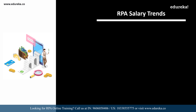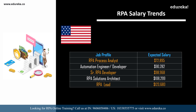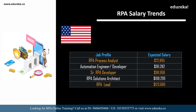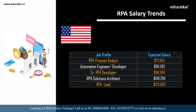Looking at the same roles in the USA: an RPA Process Analyst can expect around 72 thousand dollars, an Automation Engineer or Developer around 90 thousand dollars, a Senior RPA Developer around 98 thousand dollars, an RPA Solutions Architect around 100 thousand dollars, and an RPA Lead around 123 thousand dollars. It's a great time to start your career in RPA.